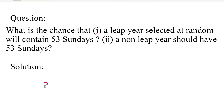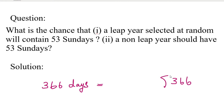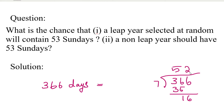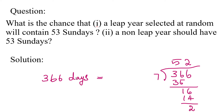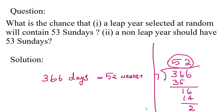We know that every leap year has 366 days. We divide 366 by 7, because we have 7 days in a week. 52 times 7 is 364, and 366 minus 364 gives a remainder of 2. So 366 days equals 52 weeks plus 2 remaining days.